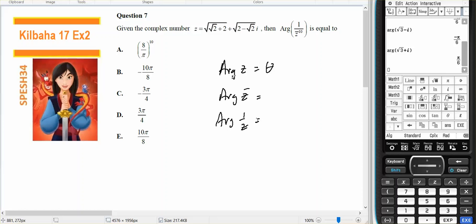Now remember, if the argument of z is theta, then the argument of the conjugate is negative theta, and the argument of 1 over z is also negative theta. So the argument of 1 over the conjugate is going to be back to theta again.